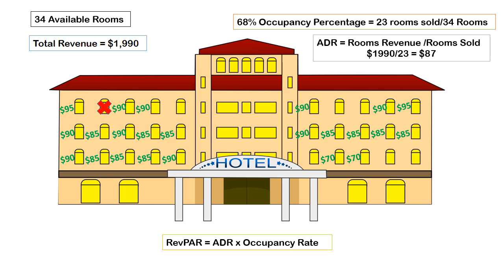That's why REVPAR can frequently be a better metric than ADR. What this does is take your average daily rate times your occupancy rate. Here our average daily rate was $87, our occupancy rate was 68%, represented as .68. You multiply those to get your REVPAR, which is $59.16. I hope this has been helpful. Thank you very much.